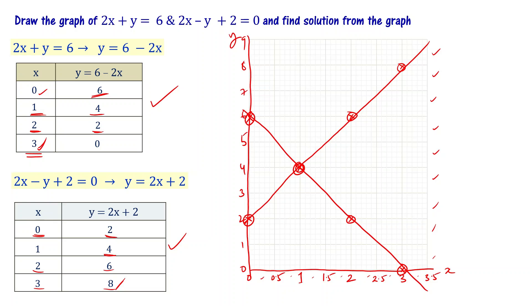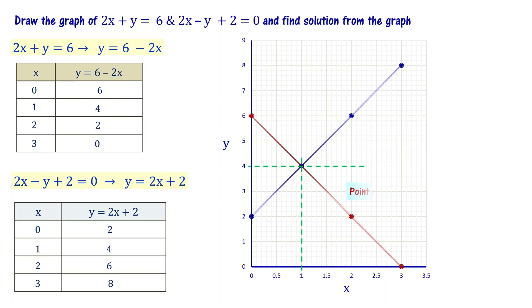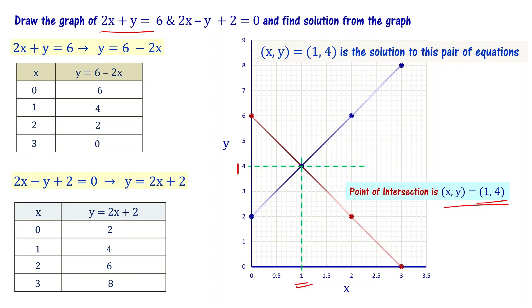We already determined that x equal to 1 is the solution. At x equal to 1, the two lines intersect. Looking at the point of intersection on the graph, we get x equal to 1 and y equal to 4. So x equal to 1 and y equal to 4 is the solution to this pair of equations.